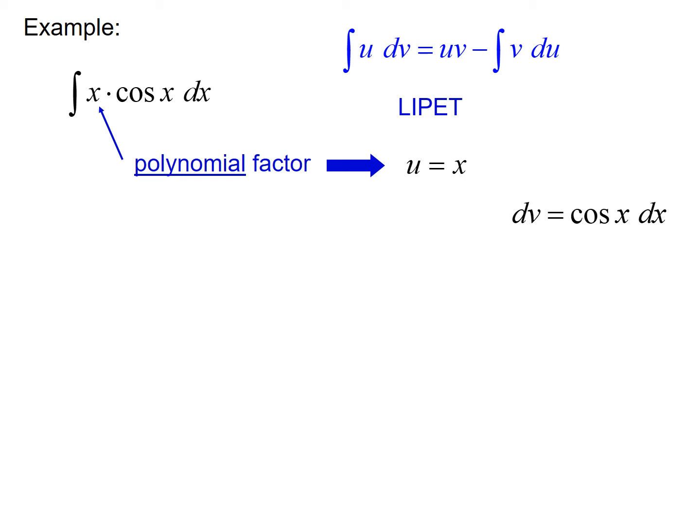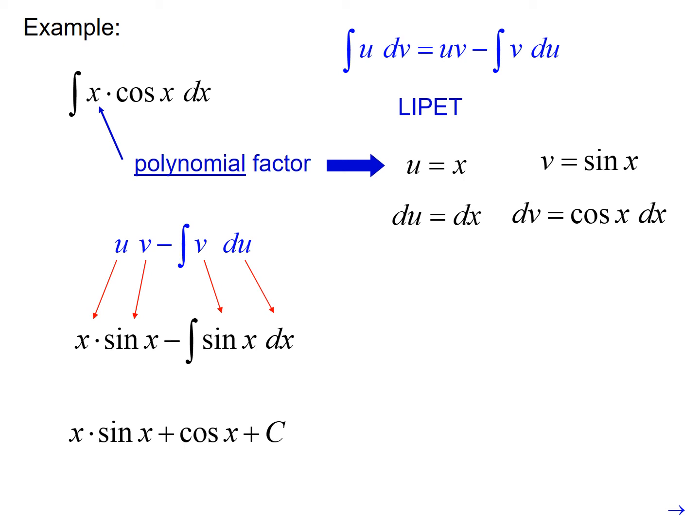That means that dv is cosine x dx. The derivative of u would be the derivative of x, so du equals dx. And if we take the antiderivative of dv, we get v equals sine of x. We can plug all of this into that integration by parts formula. We know the integral of sine is negative cosine, so this ends up being x sine of x plus cosine of x plus c.